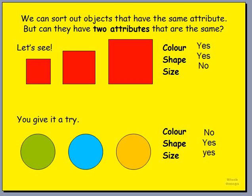So here we are — we have three circles. They are different colors. The shape is the same, and the size, if you look carefully, all the sizes are the same. So this example also has two attributes that are the same. These three circles, even though they are different colors, they can go in the same category. They have two attributes that are the same, not just one like in previous examples.